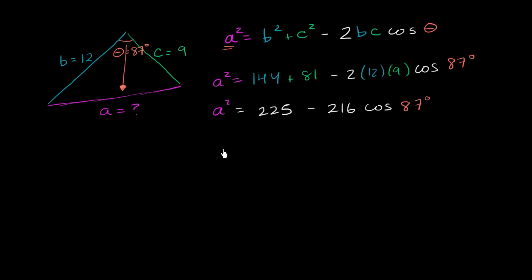So a is just going to be the square root of this. So a is going to be equal to the square root of all of this business, which I can just copy and paste. So a is going to be equal to the square root of that, which we can now use the calculator to figure out.